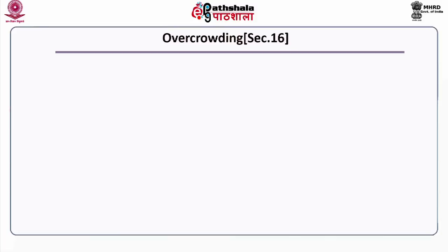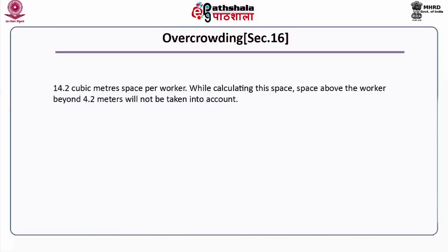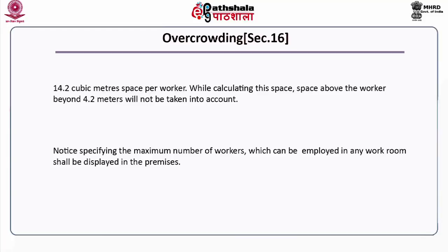Overcrowding under Section 16: 14.2 cubic meters of space per worker has been earmarked as per the specifications given in this Act. While calculating this space, the space above the worker beyond 4.2 cubic meters will not be taken into account. A notice specifying the maximum number of workers which can be employed in any workroom shall be displayed in the premises.